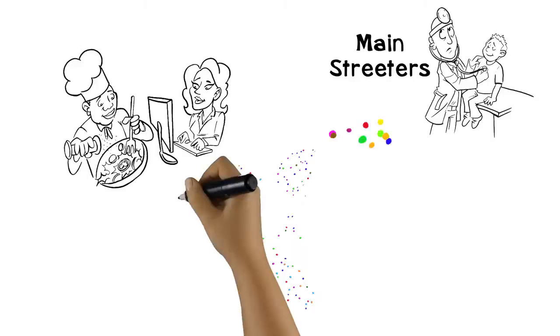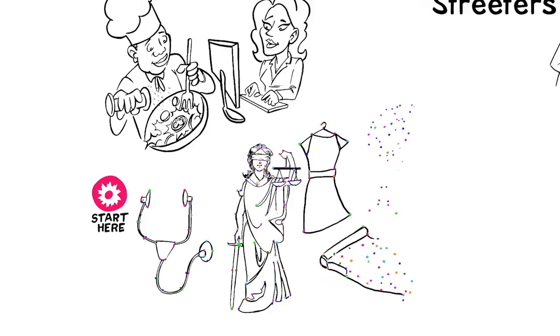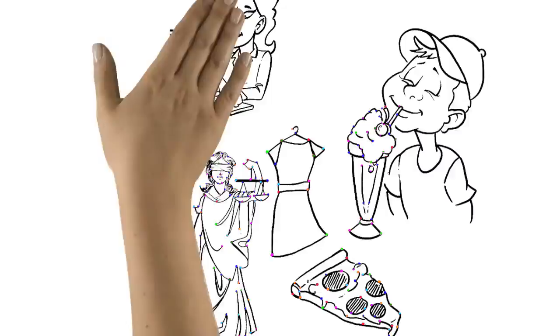Then we have our main-streeters—people that have employees and are along the main streets of our communities all across America. There are doctors' offices, lawyers' offices, independent retailers, restaurants that are making our neighborhoods vibrant.